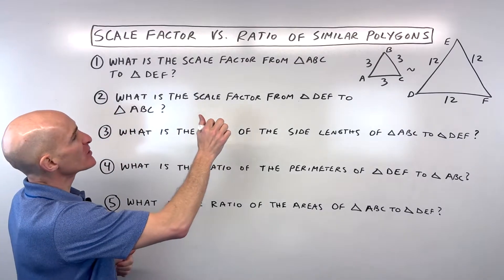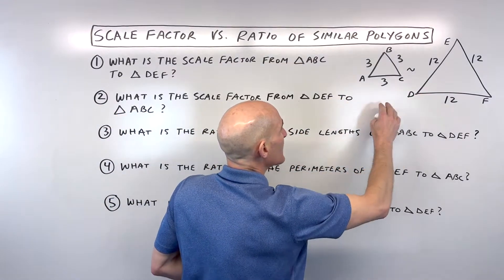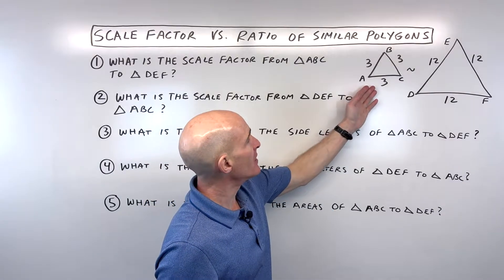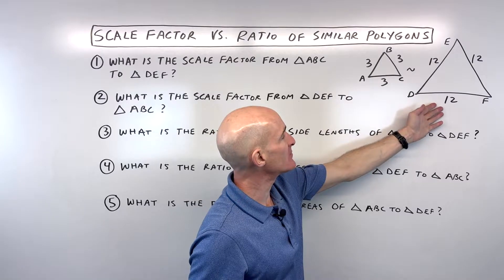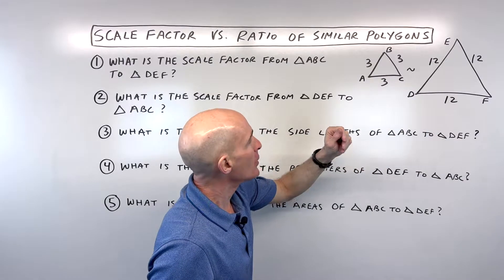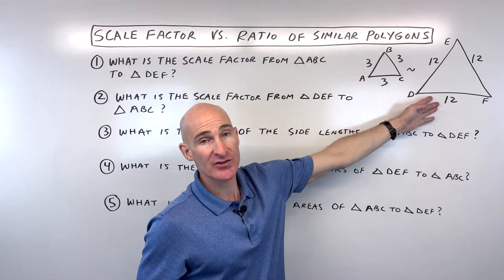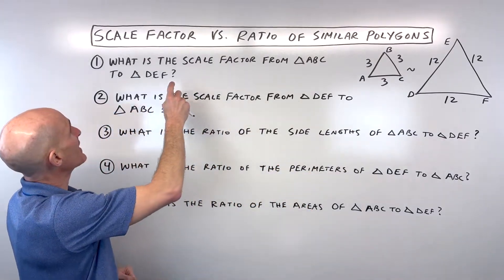So first thing we're dealing with are these two similar equilateral, equiangular triangles. And you can see this is the symbol for similar. And notice we've got triangle ABC is similar to triangle DEF. Notice that these sides are all 3, these sides are all 12. Let's see if we can answer these questions.